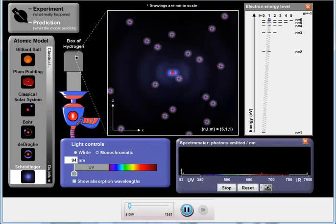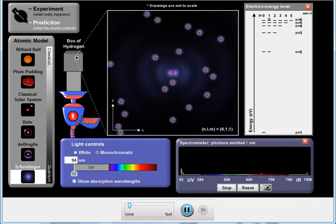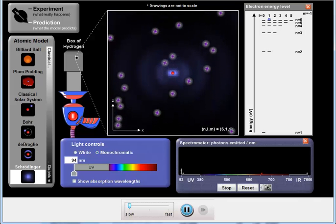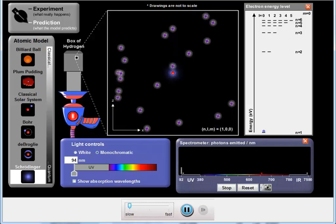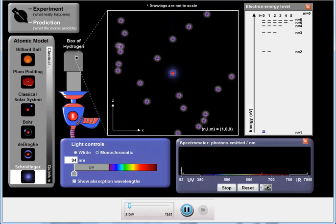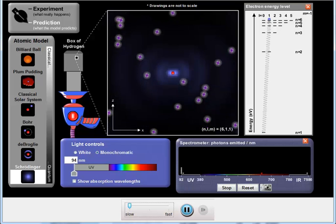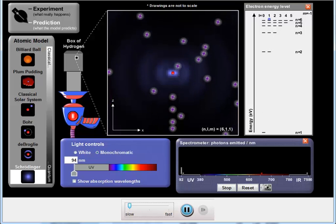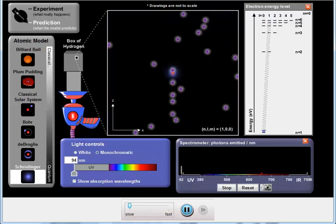When l equals 1, these are p-orbitals, and they're sort of like dumbbells. When l equals 2, those are d-orbitals. When l equals 3, those are f-orbitals. And we can also see the numbers here.